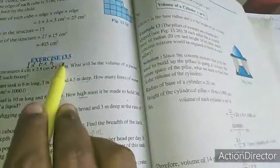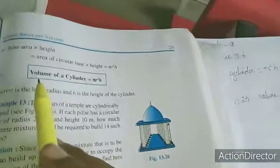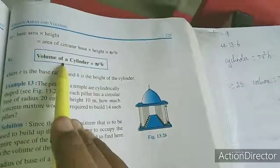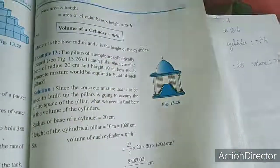Hi guys, in last class we completed exercise 13.5 and now we will move to exercise 13.6. In this exercise we are going to use the formula volume of a cylinder equal to pi r squared h.